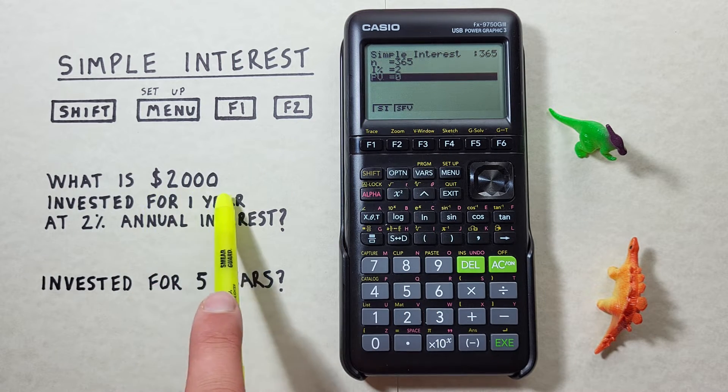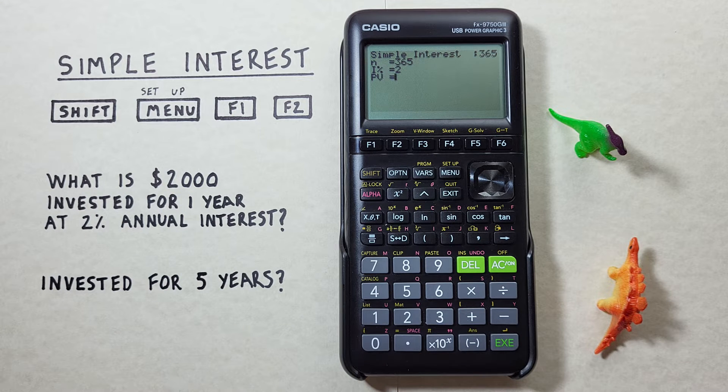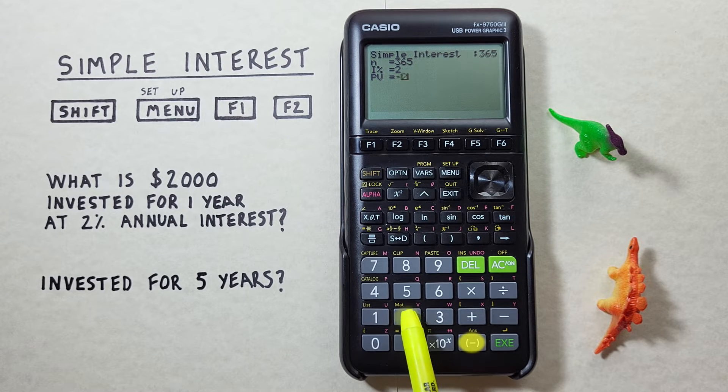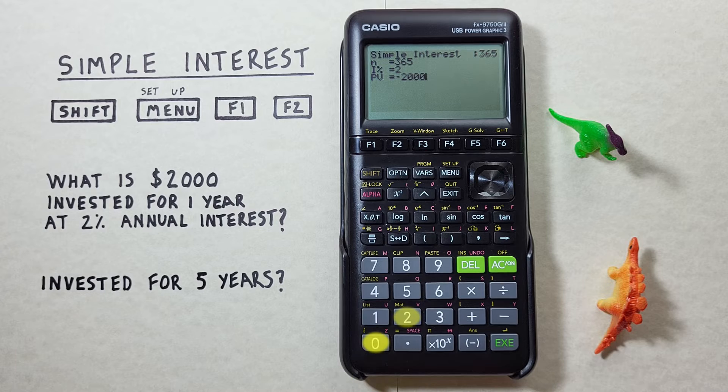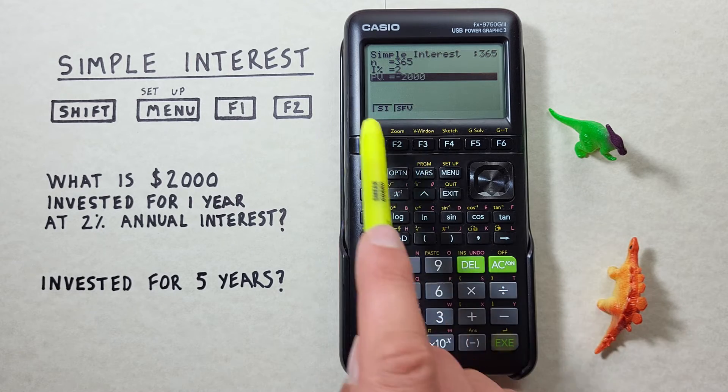So that's $2,000 and when we enter this we want to set it as a negative because that money is coming out of our pocket into the account. So we press negative 2,000. There we go. EXE and we have all our data entered.